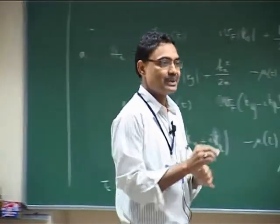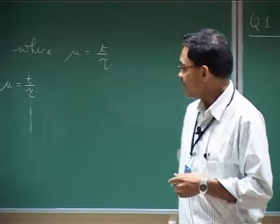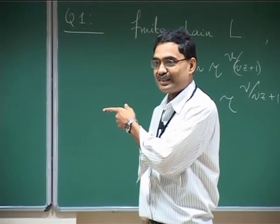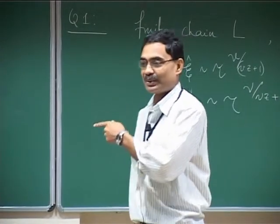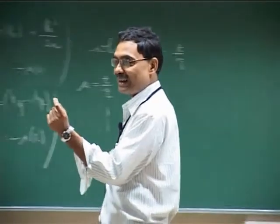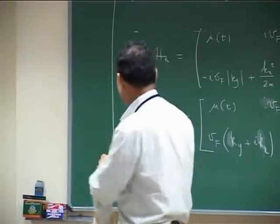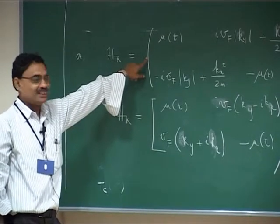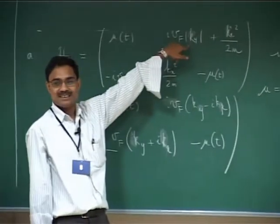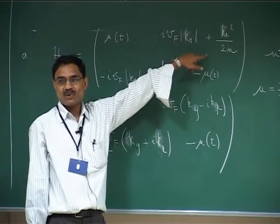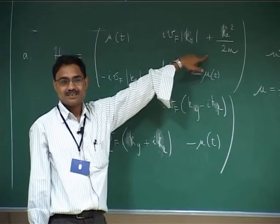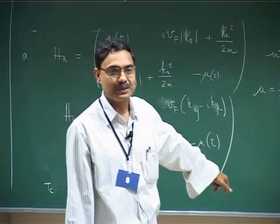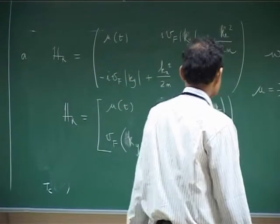The second Hamiltonian — you know what it is? It is the graphene Hamiltonian. You are looking at a single Dirac point. And what is the first Hamiltonian? This is linear in one direction and quadratic in the other — this is called a semi-Dirac Hamiltonian.